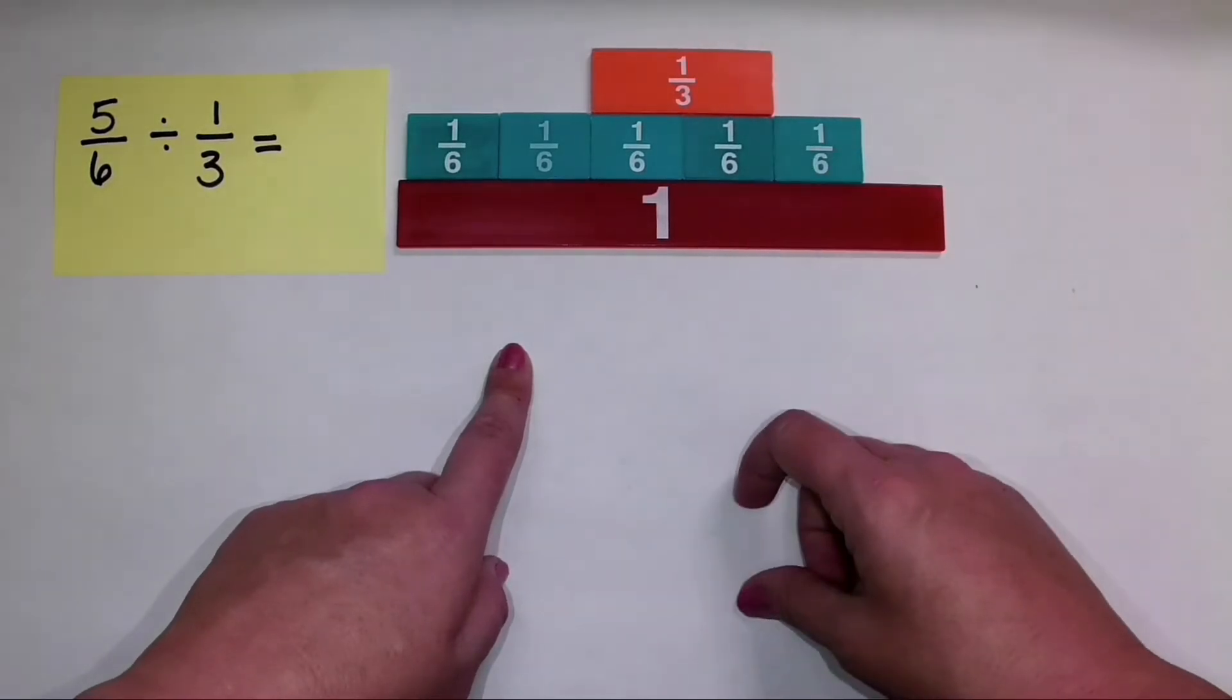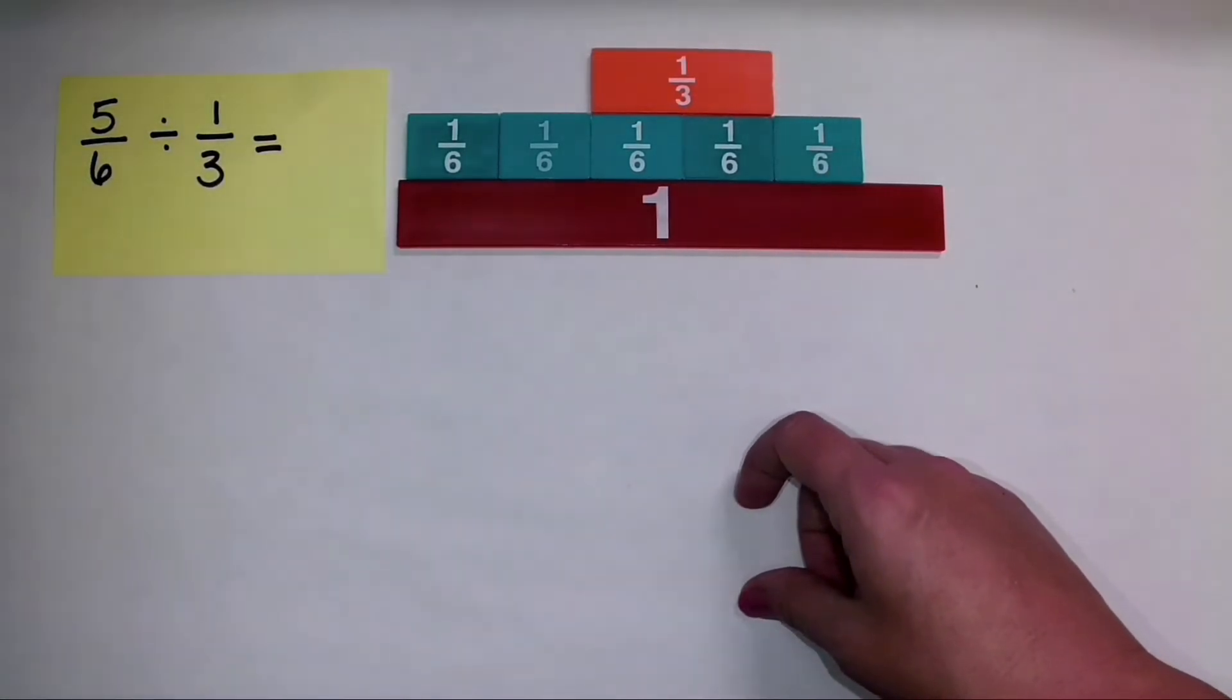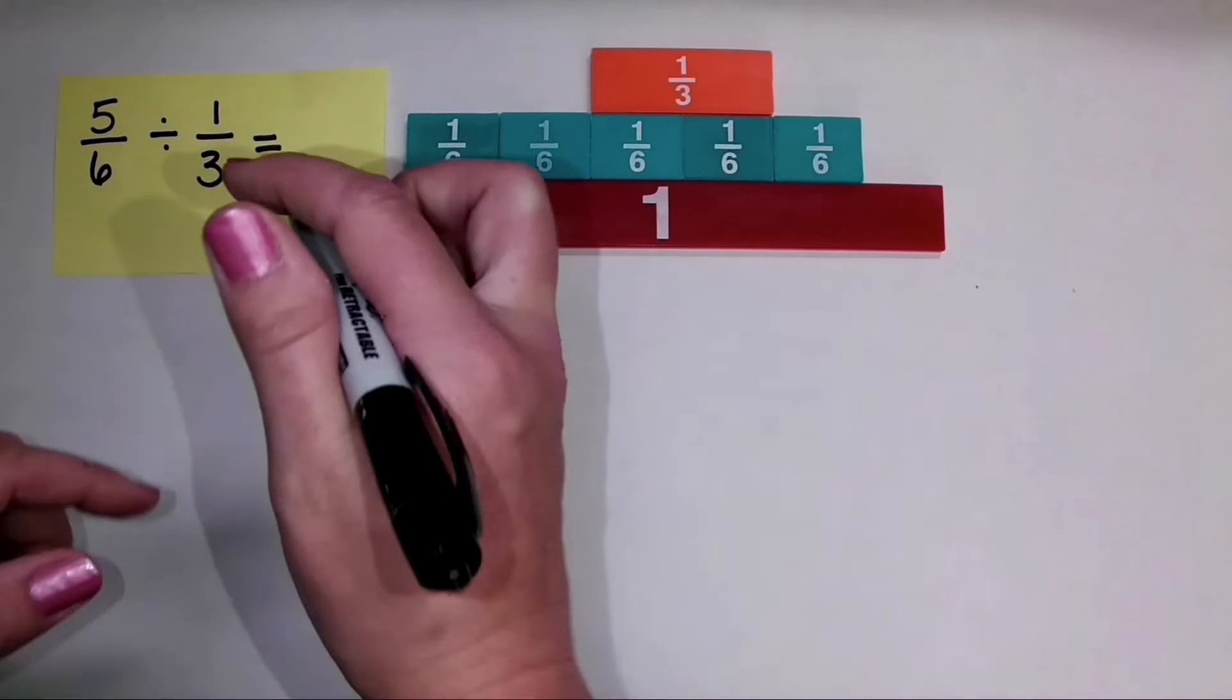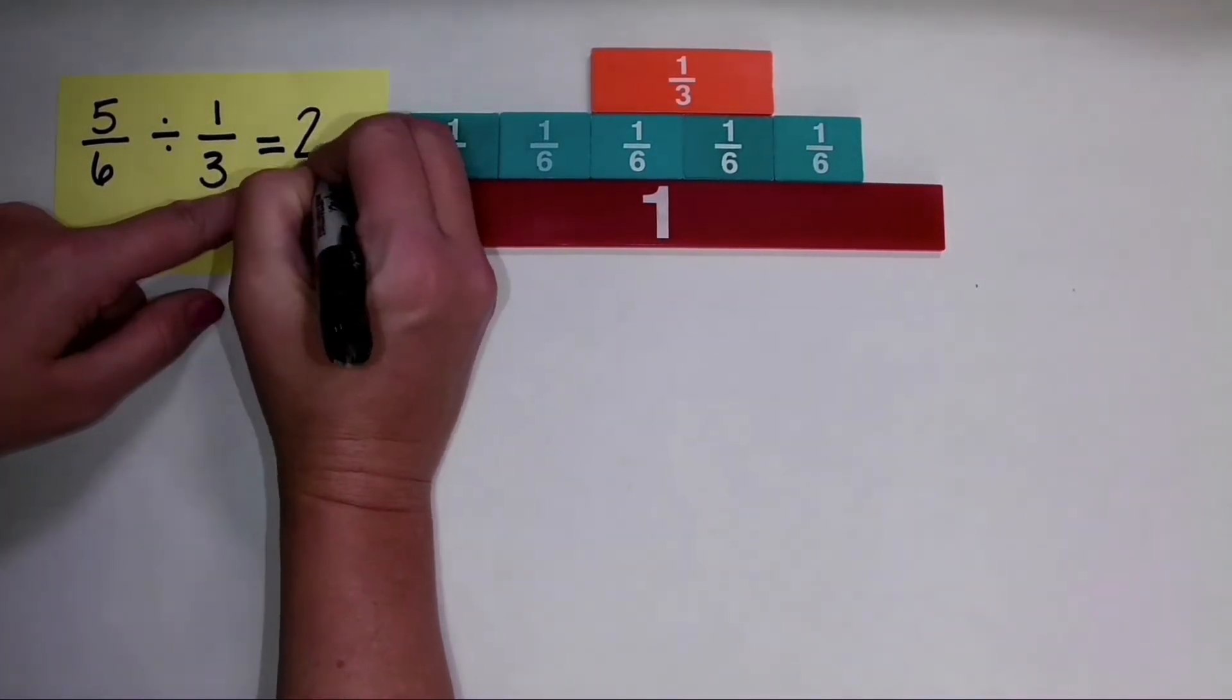I can make a second full group of one-third. So right now that tells me that I can at least make two groups.